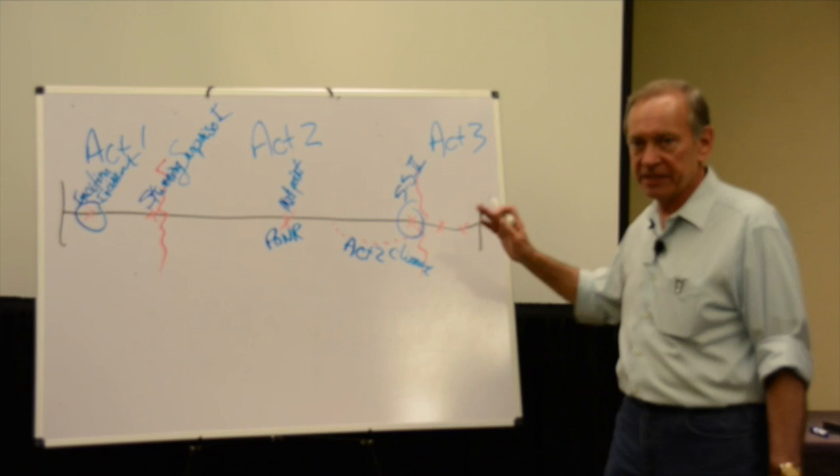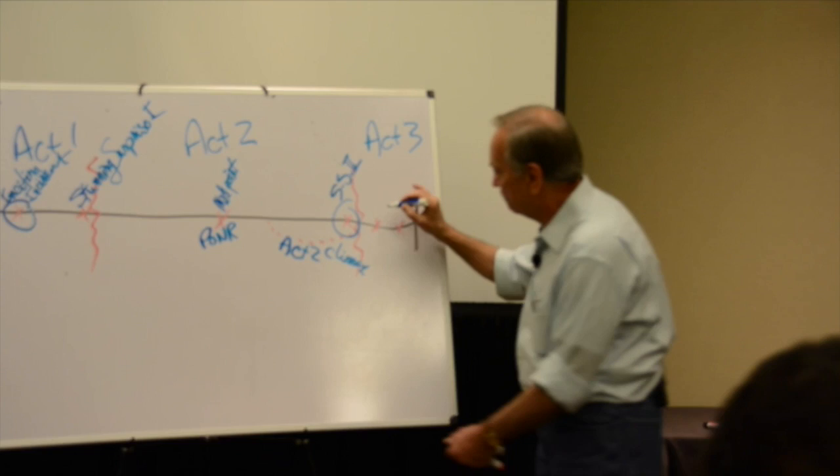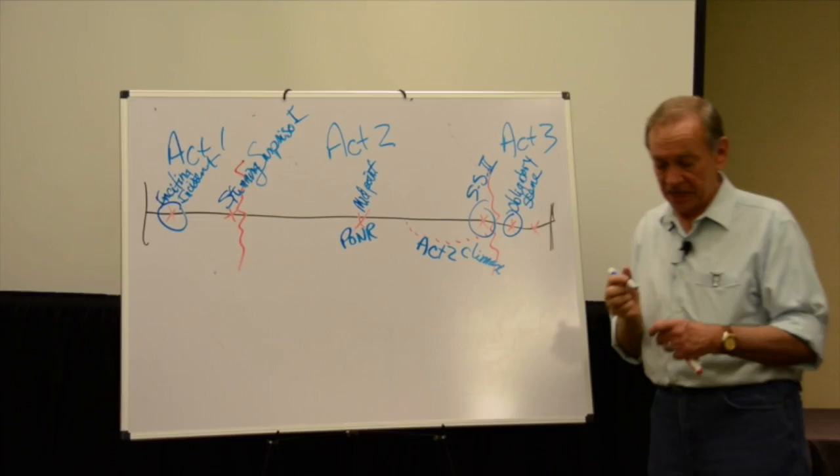But there are two major things that have to take place in Act 3. The first one is called the obligatory scene, and it says it all in the word obligatory. It has to happen. It's got to be there.